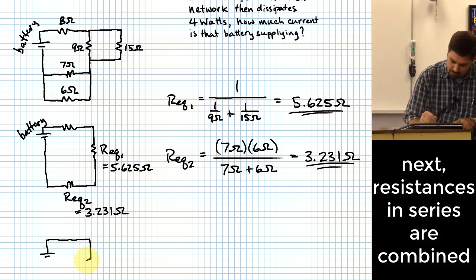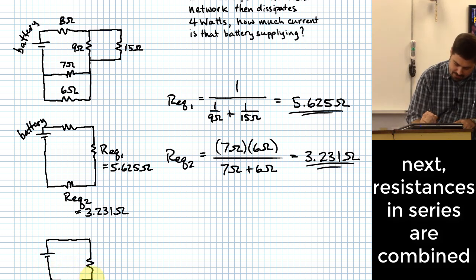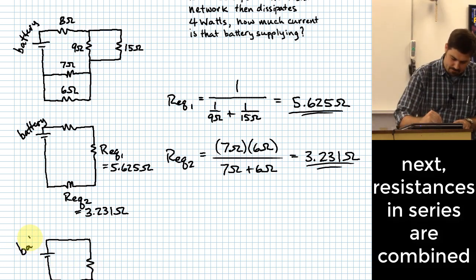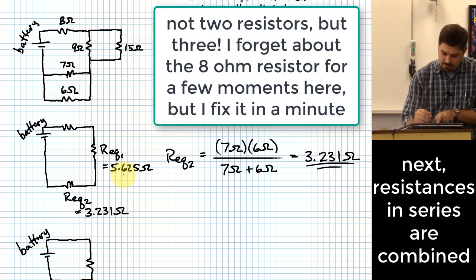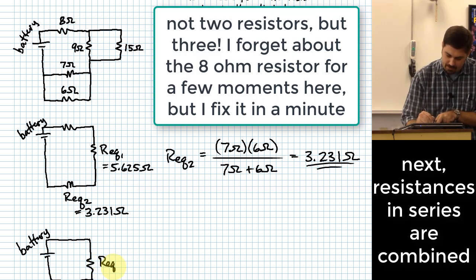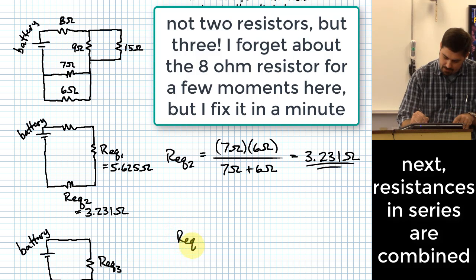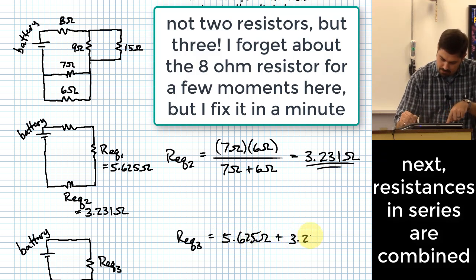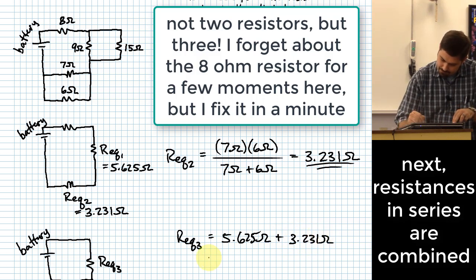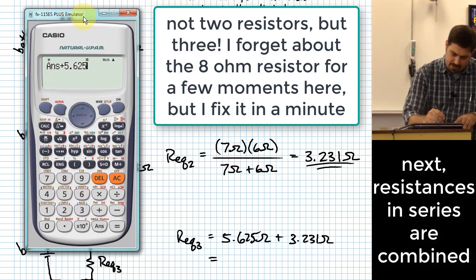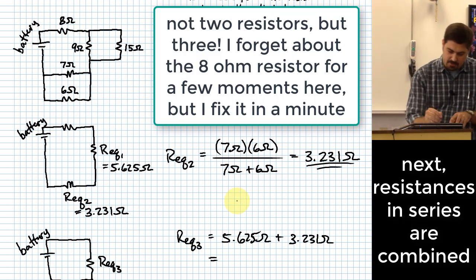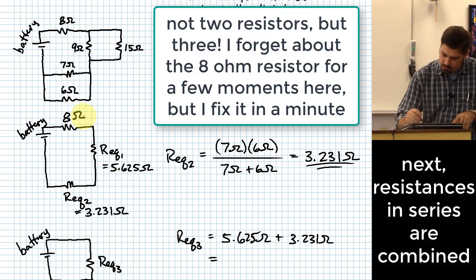So what's the next step? We're now to the point where we have two resistors that are in series again. And those two resistors can just add together. All right, so maybe I'll call that REQ3, but REQ3 is just 5.625 ohms plus 3.231 ohms. Oh, thank you. Someone said, how about that eight ohm resistor? I missed it, didn't I? This was also eight ohms. I apologize.